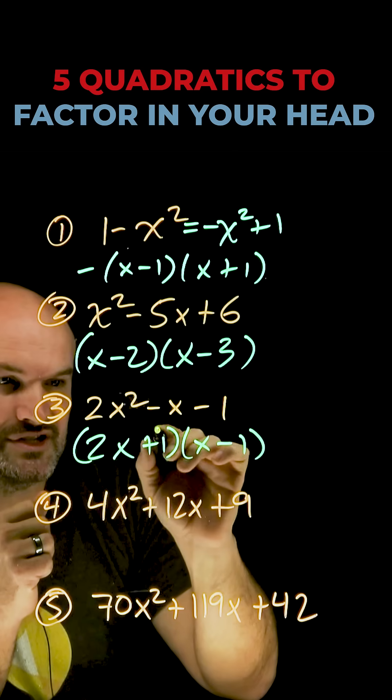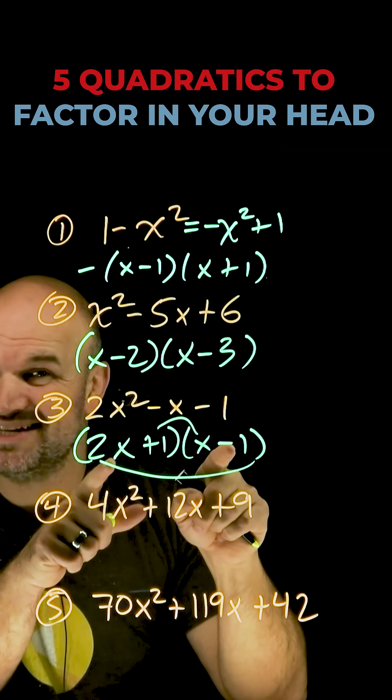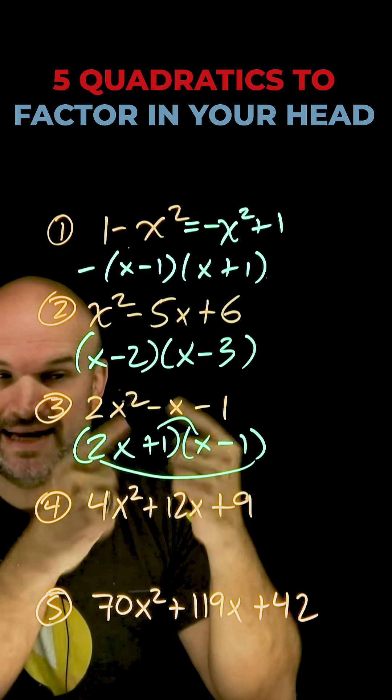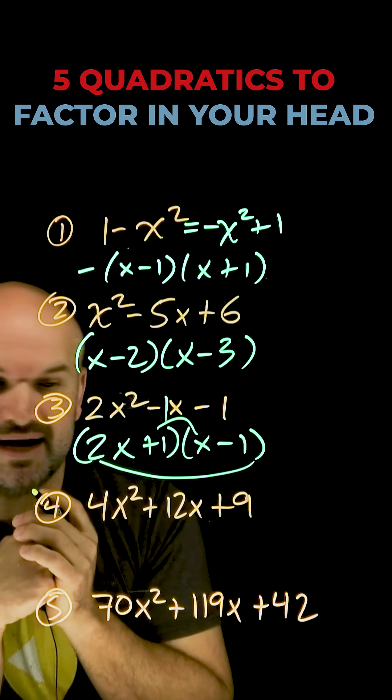And again, the math that I'm doing in my head is just going to be multiplying my inner as well as my outer. 2x times negative 1 is a negative 2x. 1 times x is going to be an x. Our negative 2x plus an x is going to be a negative 1, which is going to give me my middle term.